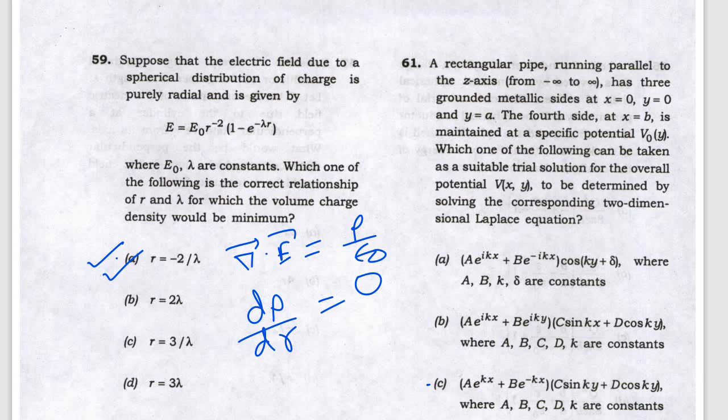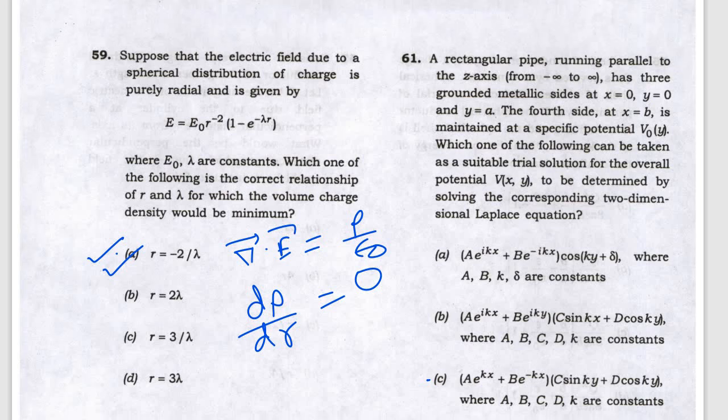This is the continuation series of part 1. We will discuss the next 60 questions in this video on Geophysics of the Geoscientist 2023. Question 61 is asking about the Laplace equation solution in the waveguide, so the answer will be C.